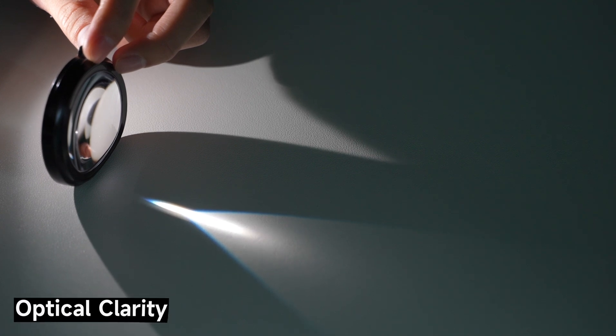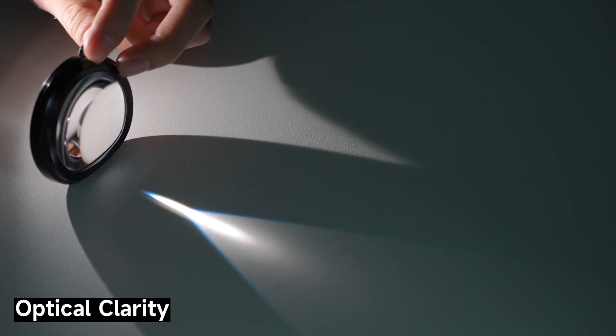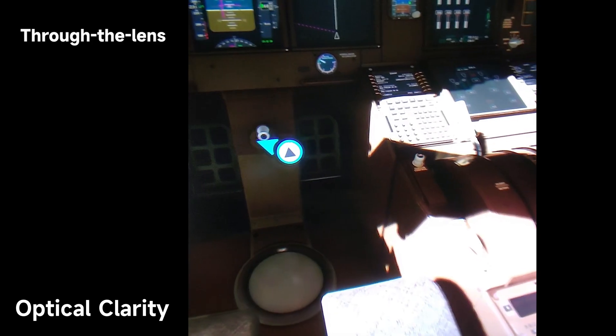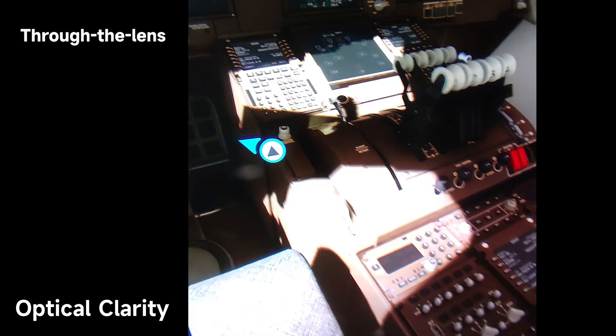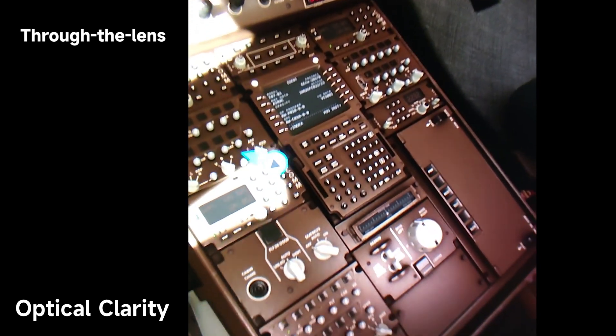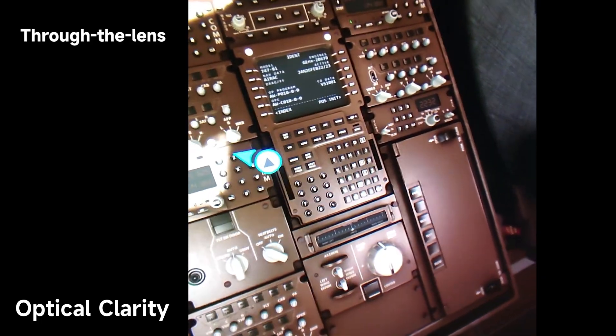Most importantly, glass lenses provide superior optical clarity, resulting in sharper and more accurate image reproduction. They have better light transmission properties, minimizing distortion, chromatic aberration, and blurring. This enhances the overall visual experience and allows for more immersive VR content.